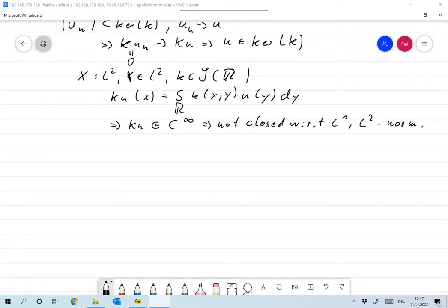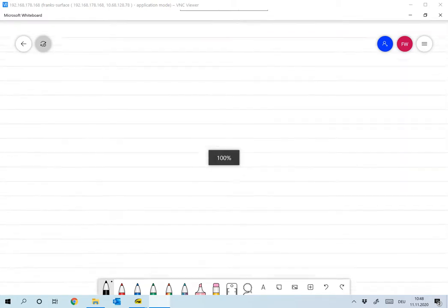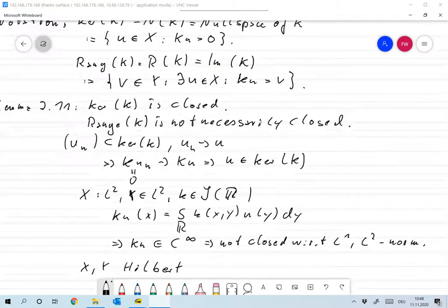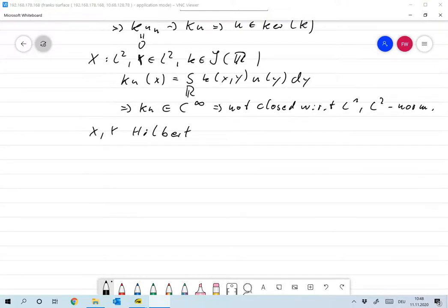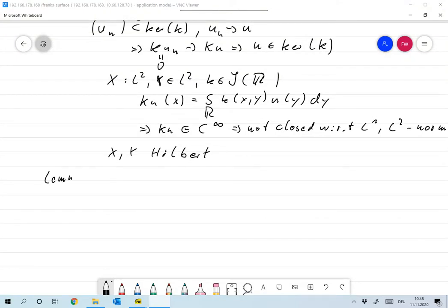So now let's move on to Hilbert spaces. So now we assume that X and Y are Hilbert. And let me give you lemma 2.12. We have that for any operator K, linear continuous, we have that